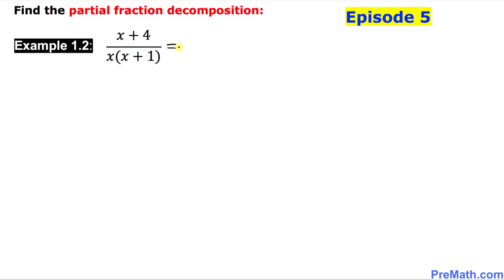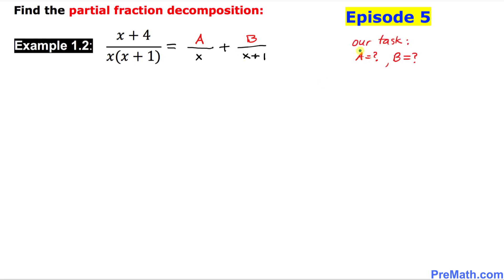The first fraction is going to have x in the denominator and the other one is going to have x plus 1 in the denominator. For the numerator, constant A is going to be for the first fraction and constant B is going to be for the second fraction. Our task is to find these A and B values.